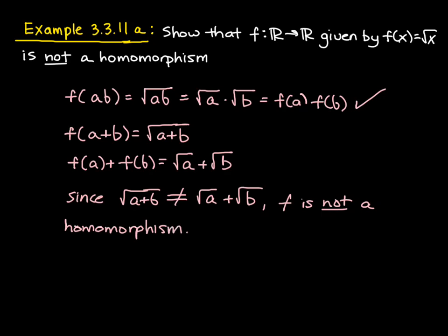So this is part A of exercise 11 in section 3.3. B, C, and D were assigned as homework. And so I want you to look at all of those examples and those exercises and try to see which criteria or both fail when we try to show that the map is a homomorphism.